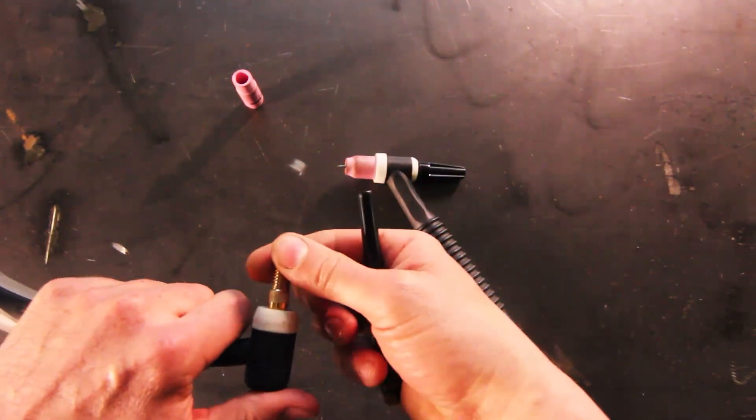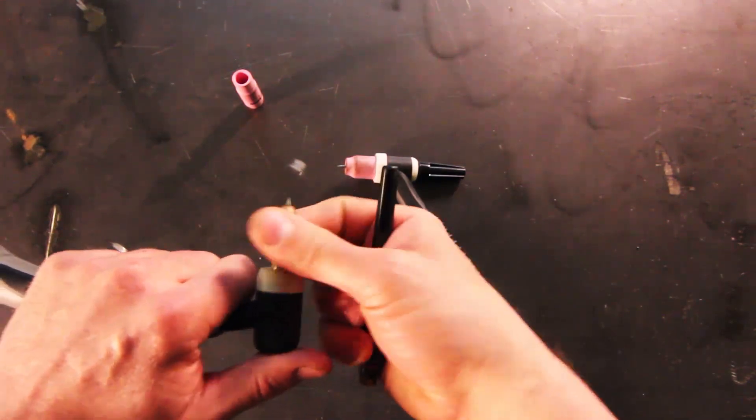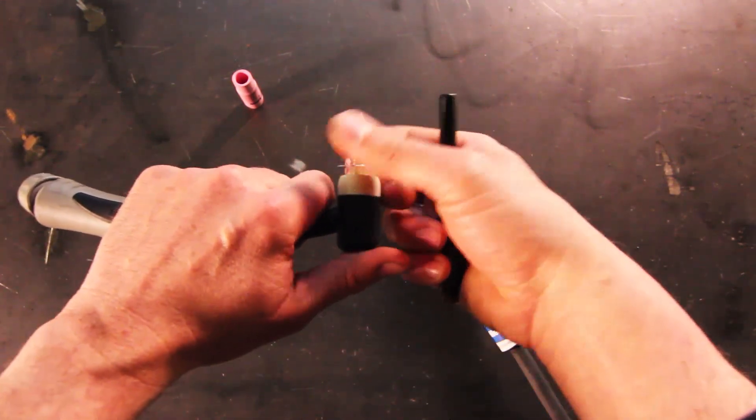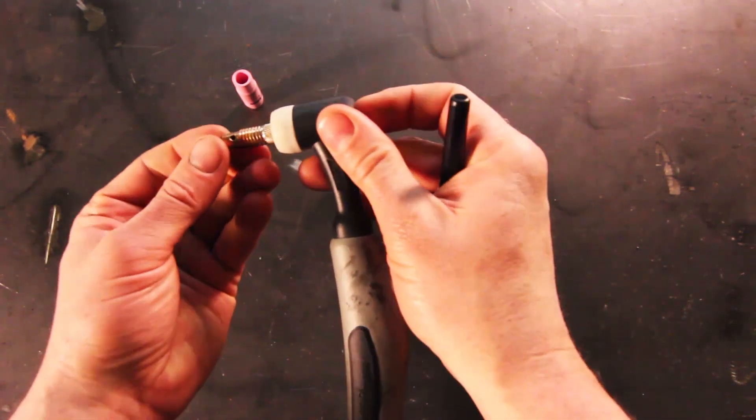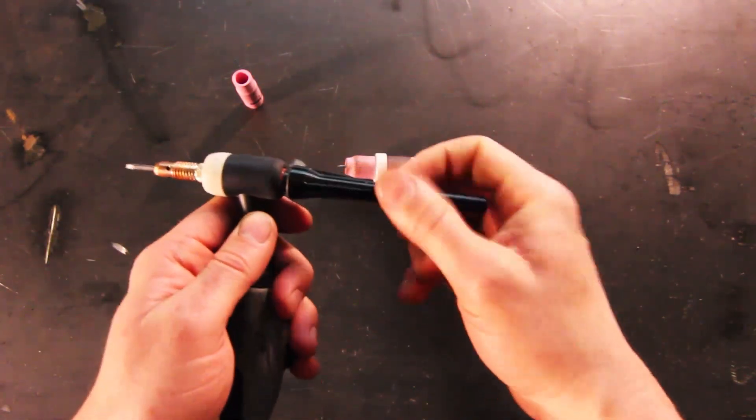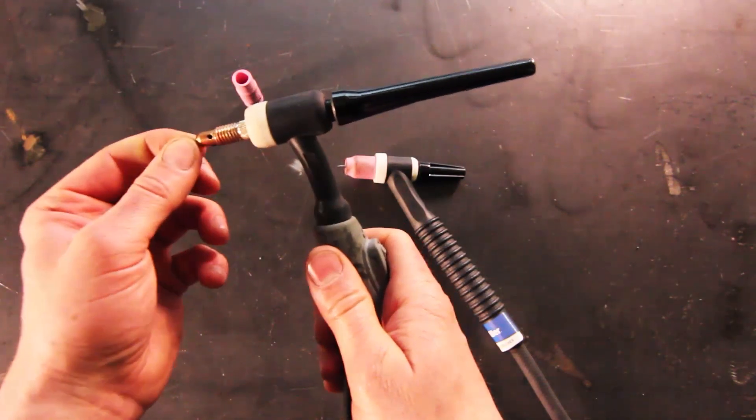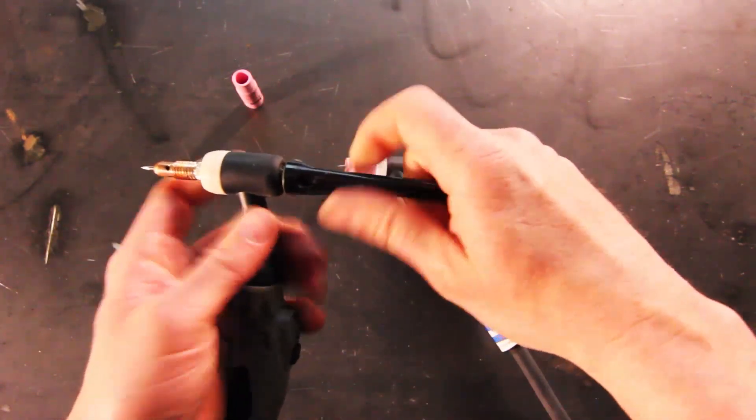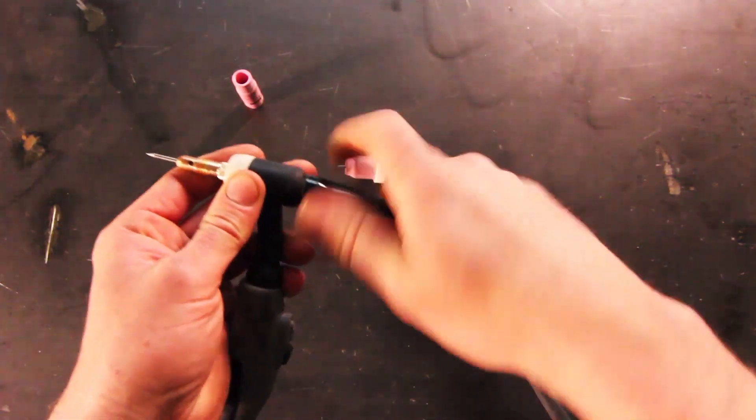When I put this back together, I'll put the collet body back on the torch head and screw that in. I'll put the back cap on loosely, and you can see that the tungsten is still loose inside the collet body. But when I tighten it down, it pinches down on the collet and collet body and holds the tungsten into place.